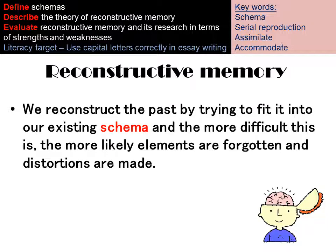We change our memories because we're trying to make them fit in with what we expect to happen, and this is called our schema. A schema is a pre-existing memory or a pre-existing expectation of what would happen in a certain situation. The more difficult a memory is to remember, the more likely it is that elements will be forgotten or that your schema will make distortions to your memory.